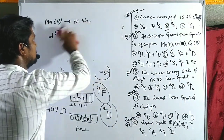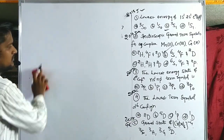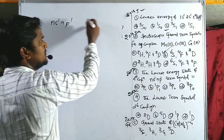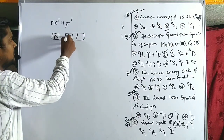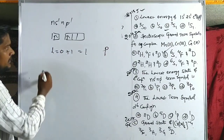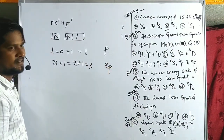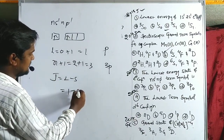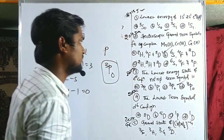Problem 3: lowest energy state for NS1, NP1 (2015 CSIR). One S electron and one P electron — two unpaired electrons. L = 0+1 = 1, term P. Multiplicity = 2+1 = 3. Less than half-filled, J = L−S = 1−1 = 0. The ground term symbol is 3P0. Option D is correct.